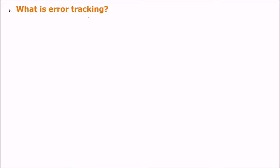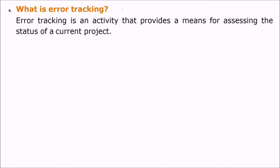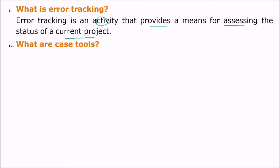What is error tracking? Error tracking is an activity that provides a means for assessing the status of the current project.